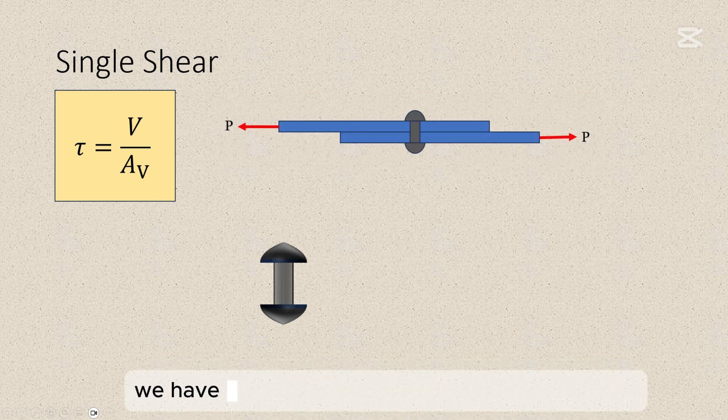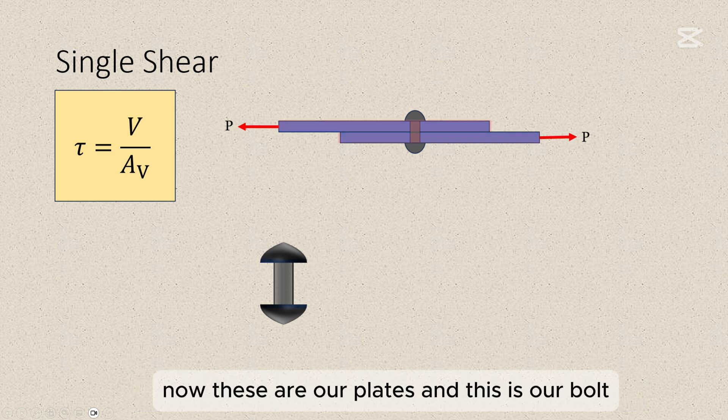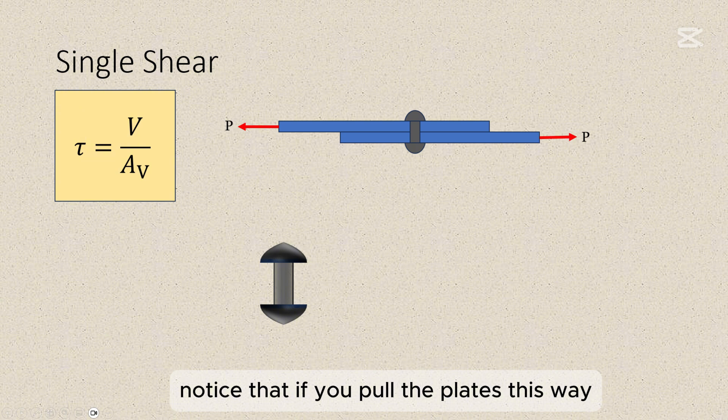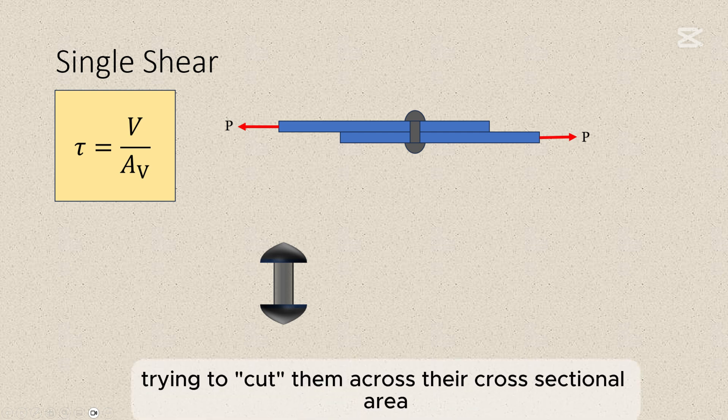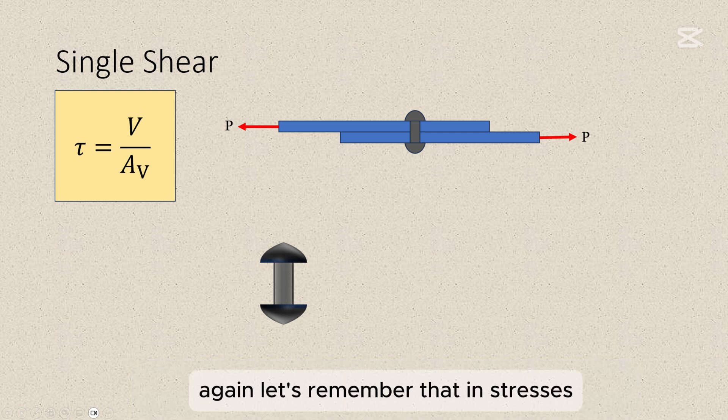Now in this figure, we have two plates connected together by a bolt. Notice that if you pull the plates this way, this part of the bolt will have the tendency to slide past each other because you're pulling it here and also here. The bolts experience shear stress due to the forces trying to cut them across their cross-sectional area.